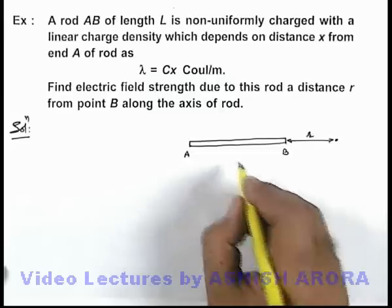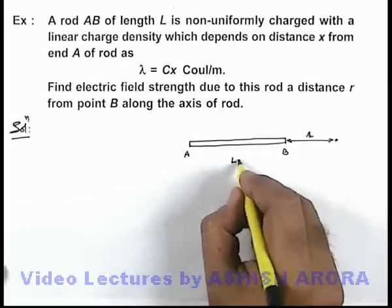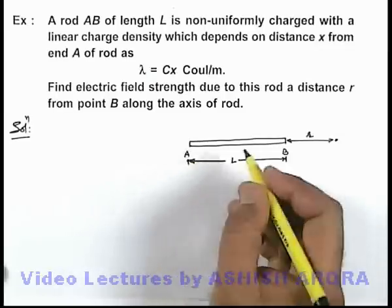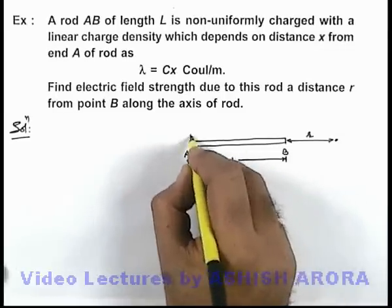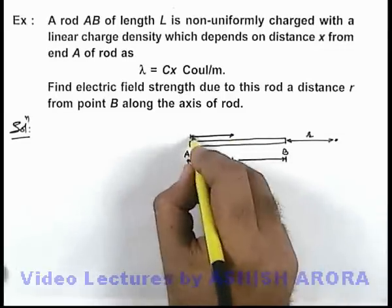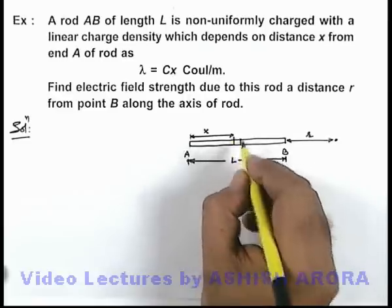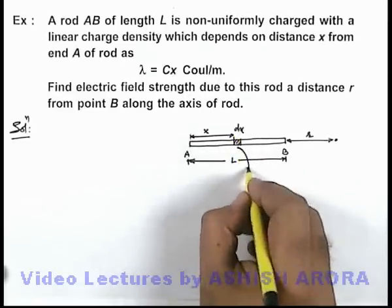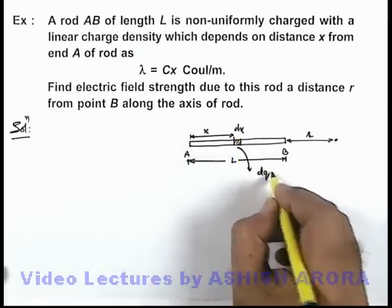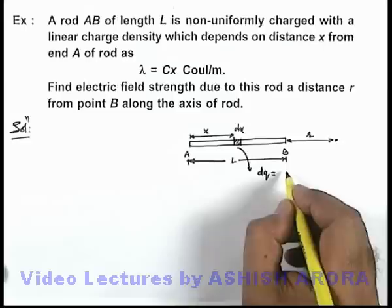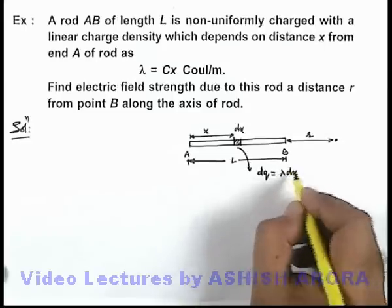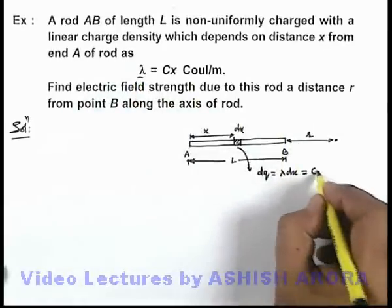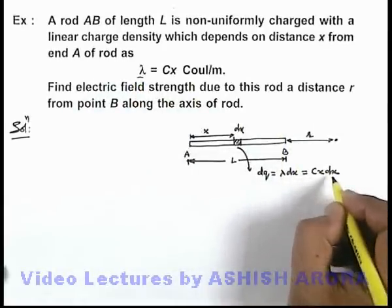For this rod of length l, let us consider an element at a distance x from end A of width dx. The charge on this element dq can be written as λ·dx, and since λ = cx, this gives dq = cx·dx.